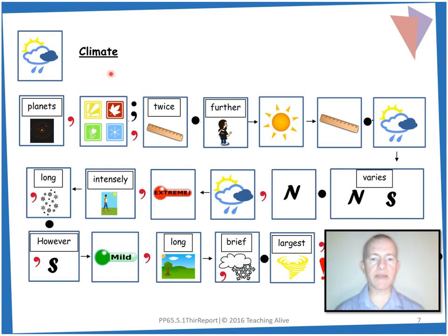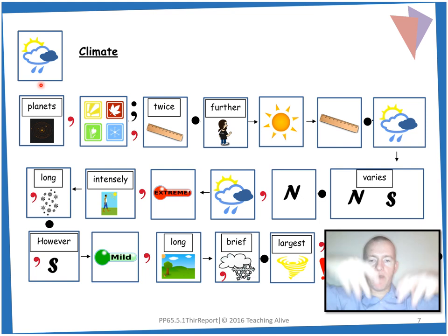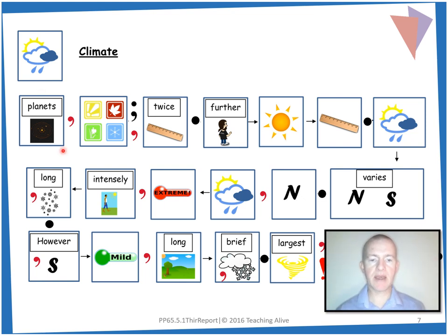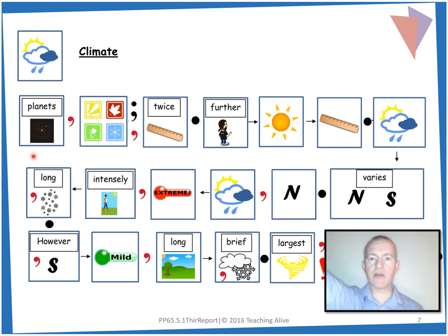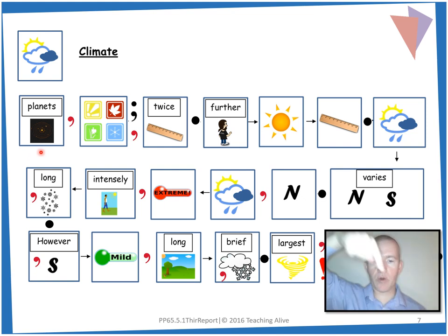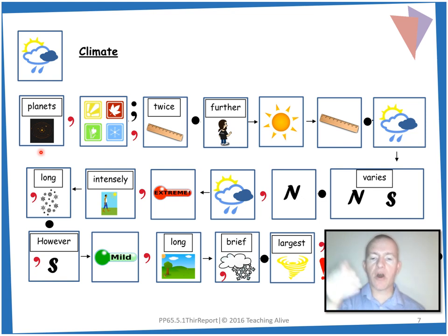So our climate section — we'll start with the title. We've got a sun, the rain, and a cloud — so climate. And then we've got out: we'll say 'get out' and point to the door. So: out of all the planets in our solar system — we can go around like we're orbiting — comma.